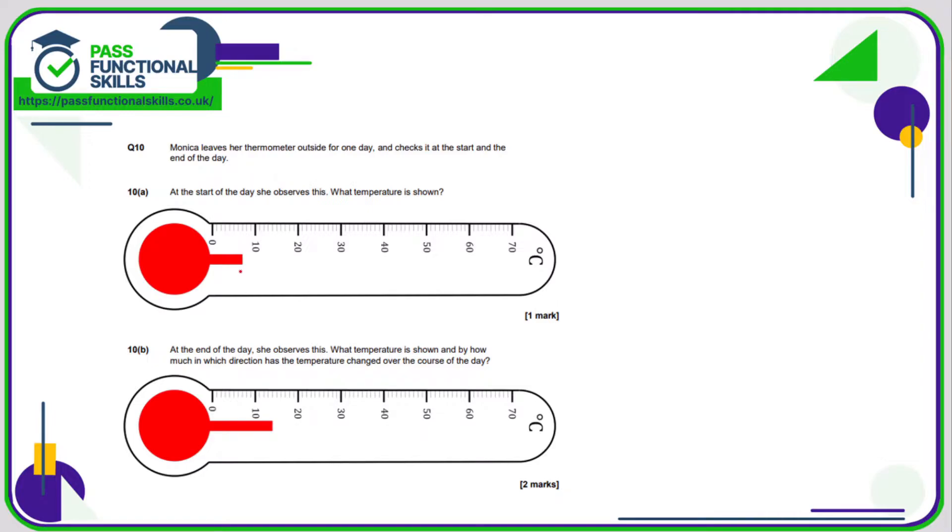Question number 10. Reading the thermometer is not the easiest task, but for part a we can assume that it lines up here, which is 7 degrees C. Later on in the day, that lines up here, which is 11, 12, 13, 14 degrees C. We also need to work out the difference and whether it's an increase or a decrease. Well, it has certainly gone up, so it's increased by 14 take away 7, so that's an increase of 7 degrees Celsius.